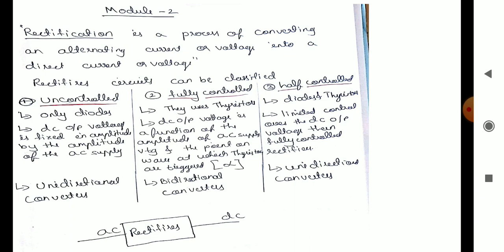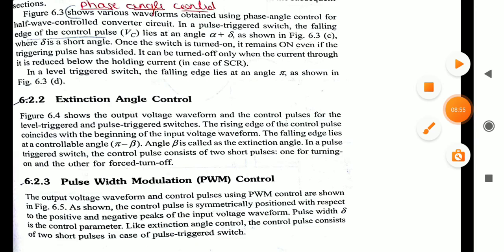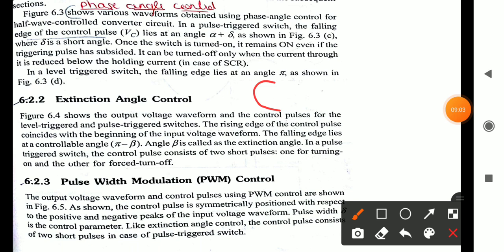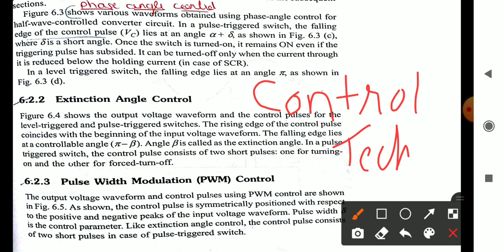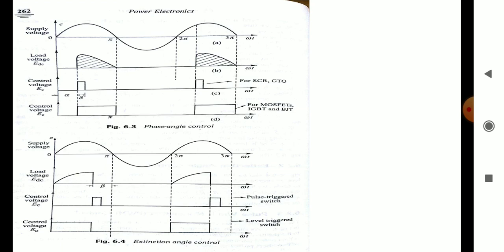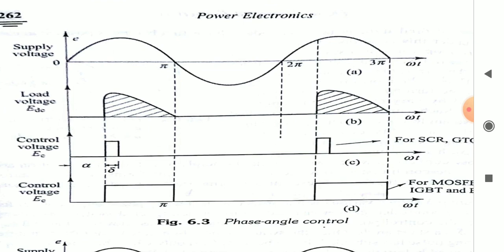Based on power flow: unidirectional means power flows from input to output; bidirectional means power flows both ways. The next topic is control techniques. There are three types of control techniques for controlling output voltage: phase angle control, extension angle control, and pulse width modulation control.